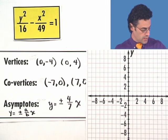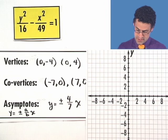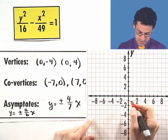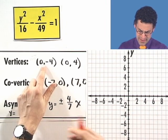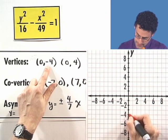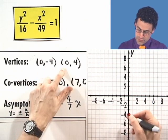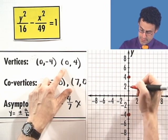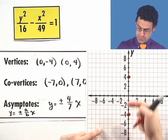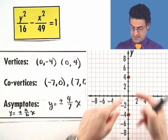The vertices are 0, 4 and 0, negative 4. So let's put those points in. So 0, negative 4 right here and 0, 4. There we go. So that's going to be the low point of this wing and this is going to be the high point of this wing. It's going to go down like this and up like that.